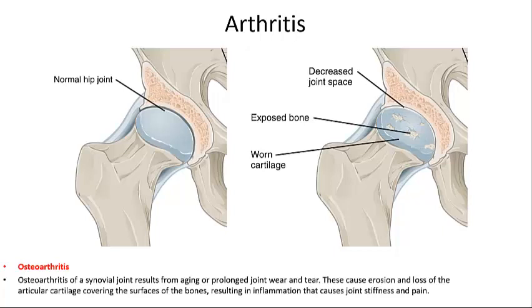Rheumatoid arthritis is an autoimmune disease that can occur at any age but is more common in middle-aged individuals, particularly women. Infection, genes, and hormone changes may be linked to it. Rheumatoid arthritis usually affects joints on both sides of the body equally — an indication it is not associated with wear and tear. The disease starts out slowly with only minor pain but can progress to be extremely debilitating.